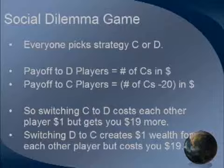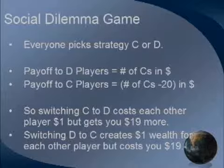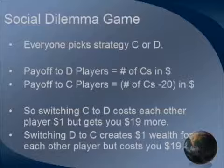So what happens when it comes to providing public goods? Behavioral economics is all the rage, so let's try an experiment — a social dilemma game. All you have to do is decide whether you want to play strategy C or strategy D. We'll count up how many people chose each. If you're a D player, you get a number of dollars equal to the number of C players. If you're a C player, you get the number of C players minus 20.